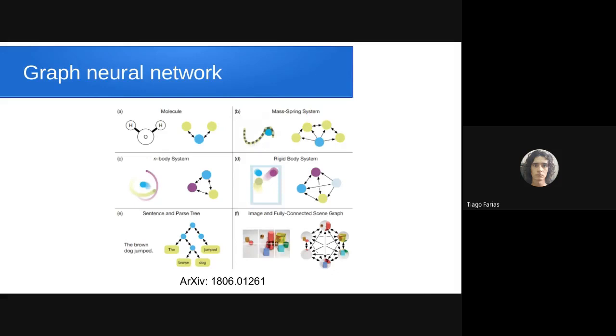Here are examples of graph neural networks. You can transform molecules for example to graphs, mass-spring systems, any body systems, rigid bodies, and so on. You can transform a system into a graph and take this graph as input to the neural network.